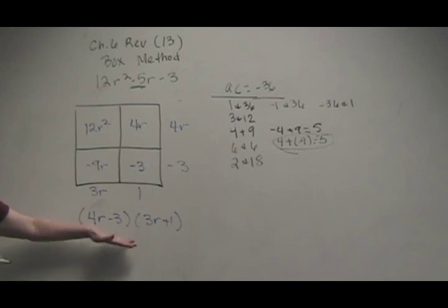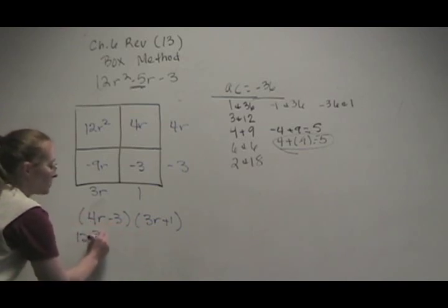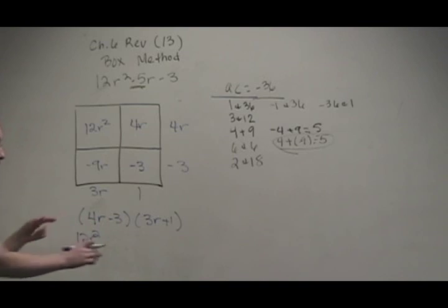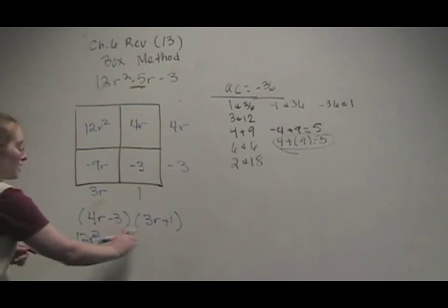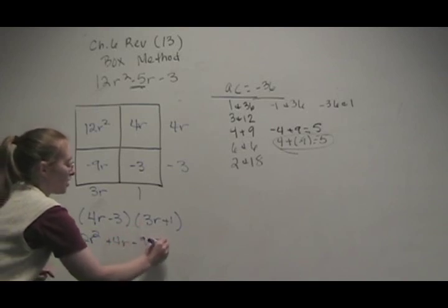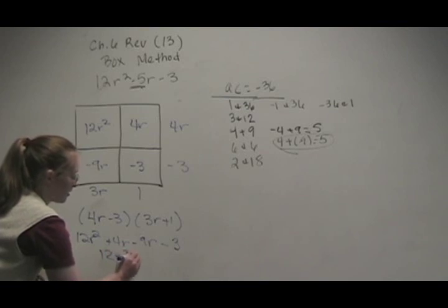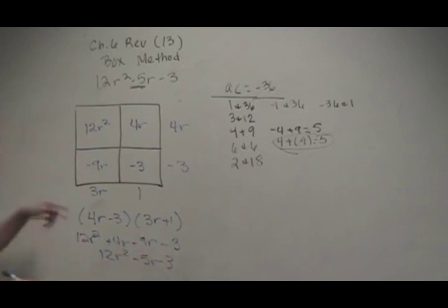You can check this, though. So, get out your FOIL and just FOIL it back. 4R, 3R, 12R squared. Okay, FOIL outer. 4R, inner, negative 9R. And last, negative 3. Let's see here. Negative 5R minus 3. We're back to where we started, so this is our correct factored form.